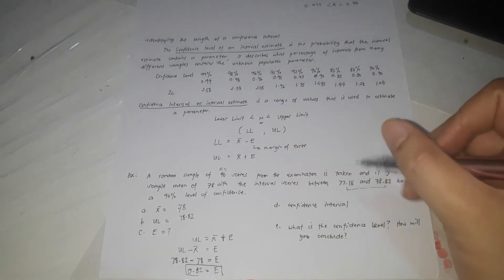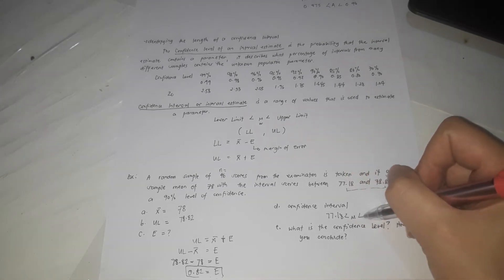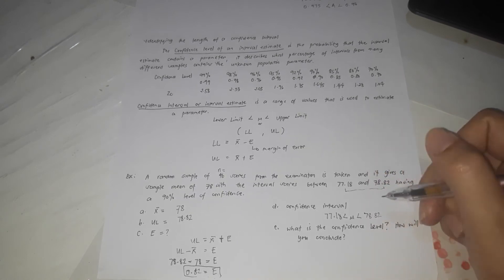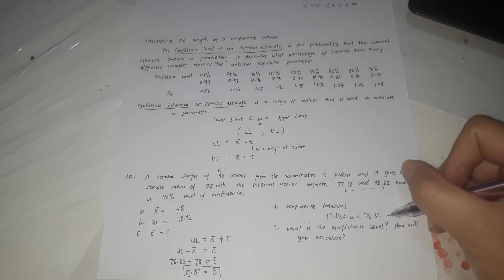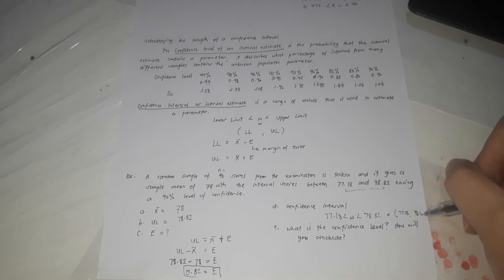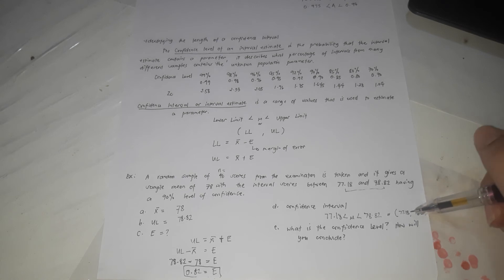The confidence interval is written as 77.18 < μ < 78.82, or simply in parentheses: (77.18, 78.82). This means the population mean lies between 77.18 and 78.82. The sample mean is 78, but the population mean — considering the entire population rather than just the 46 samples — is estimated to be somewhere between 77.18 and 78.82.